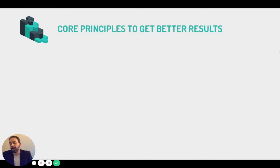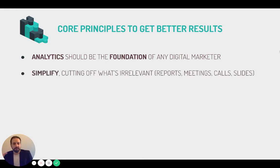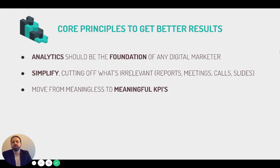What are the core principles for getting better results? First, analytics should be the foundation of any digital marketer. Unfortunately, this isn't true in all cases — sometimes digital marketers focus only on the creative aspects, which is fine, but they don't focus on analytics, which means understanding what they do and recognizing mistakes to learn from. Then, simplify — going back to Occam's Razor. Cut off what is irrelevant: not only KPIs, but also reports, meetings, calls, and slides. Whatever is not relevant for your audience is not necessary. Move from meaningless KPIs to meaningful KPIs.